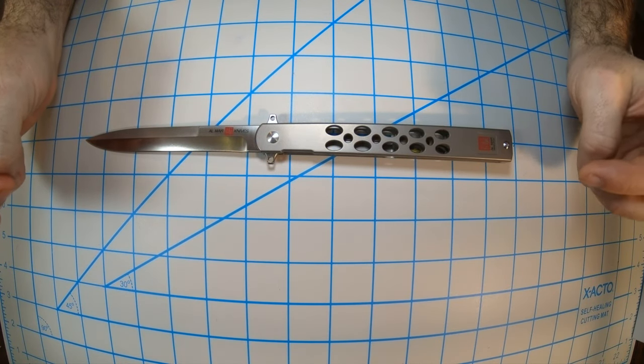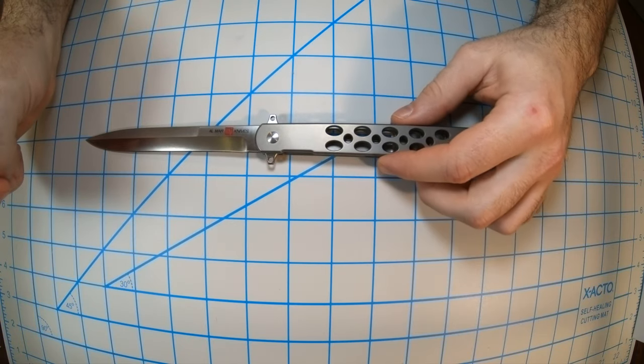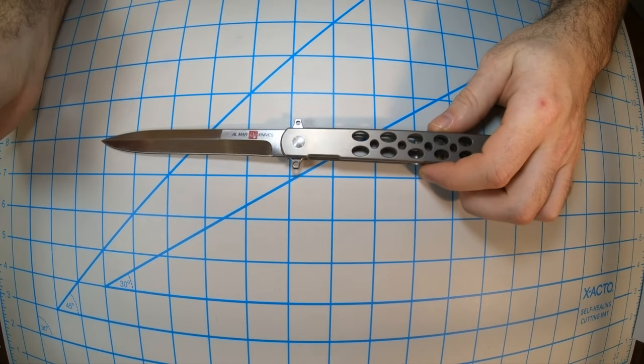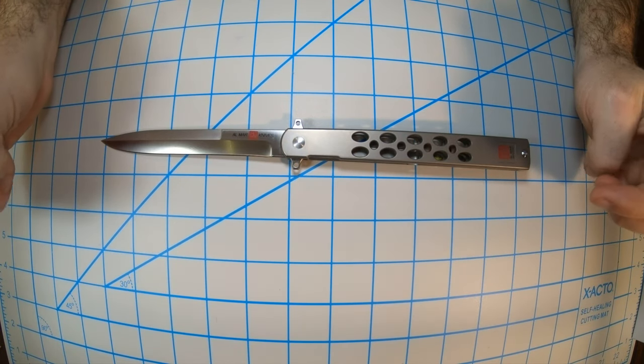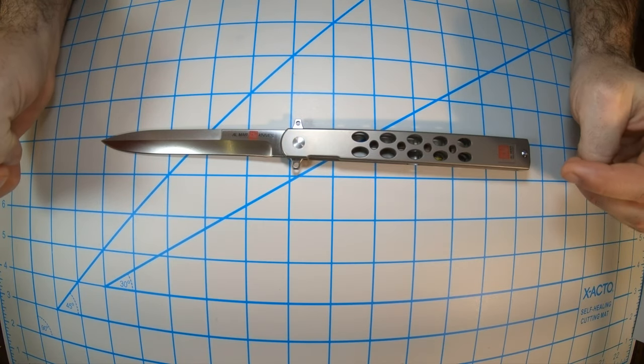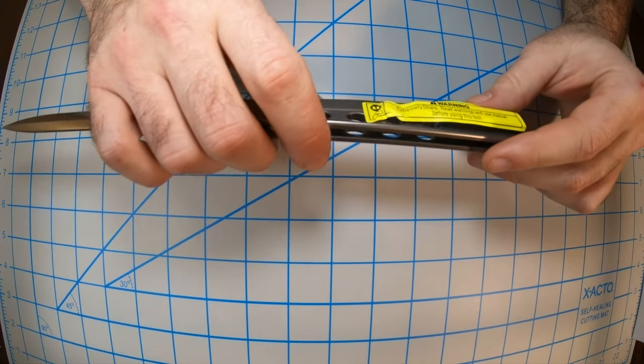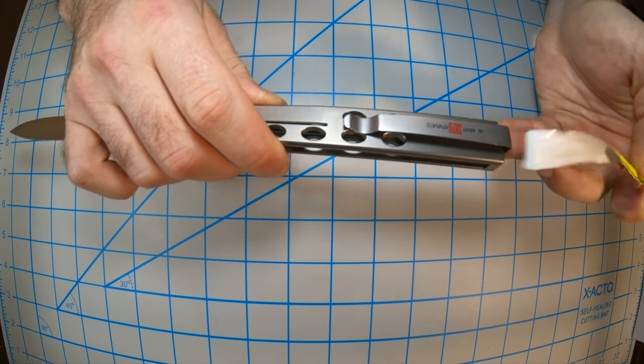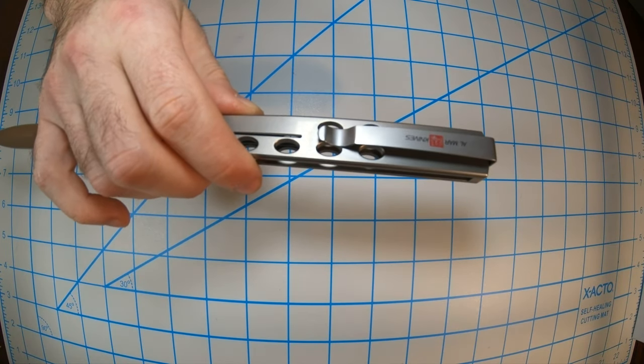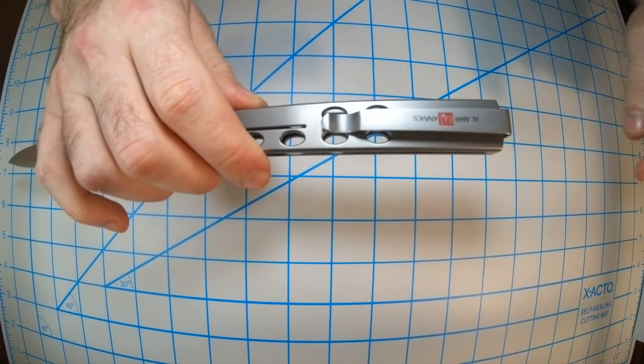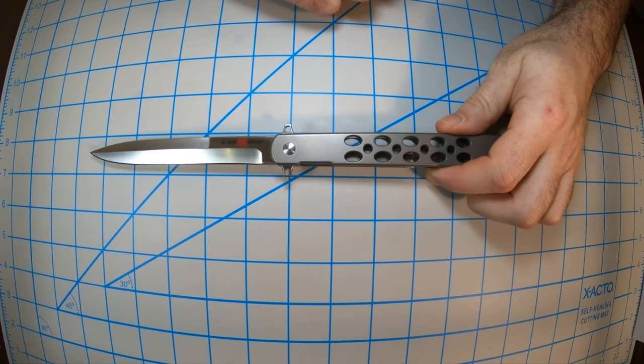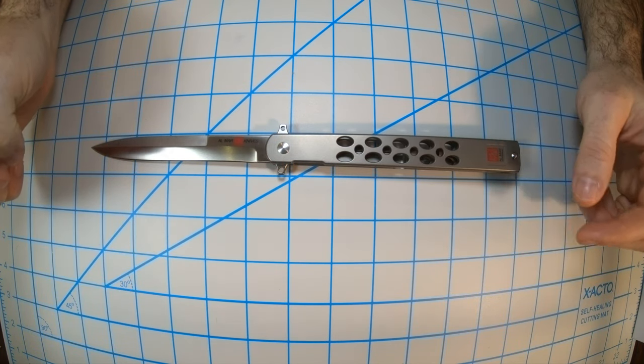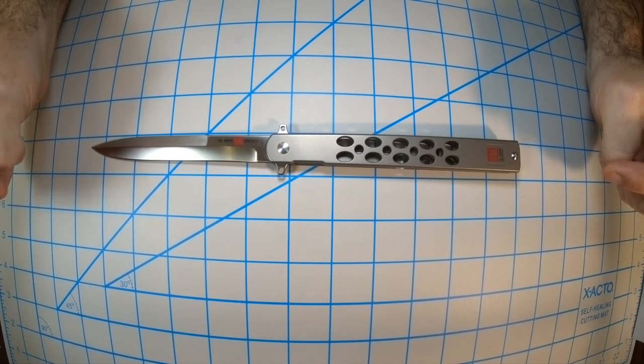It's 0.4 inches thick, which is why they named it Slimline. The clip is made of stainless steel. Let's unwrap it. You can see it's reversible and positioned for tip-up carry.